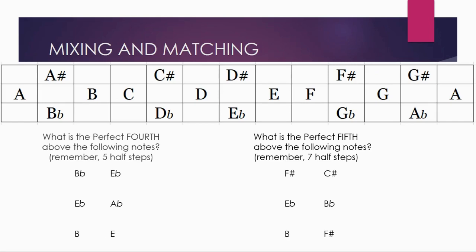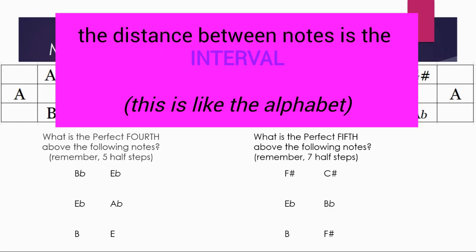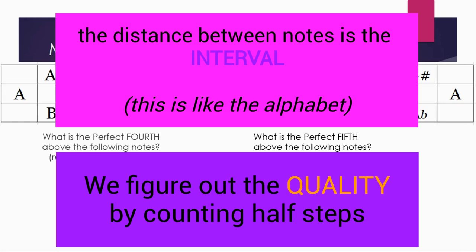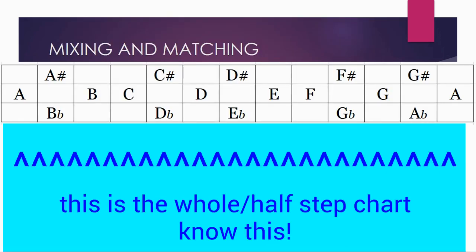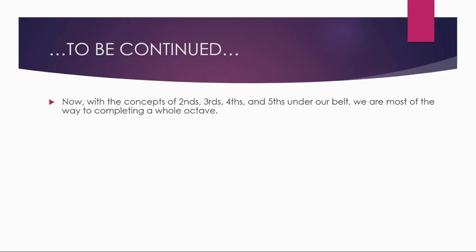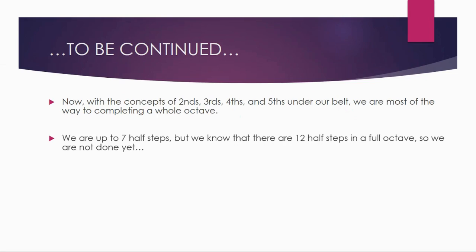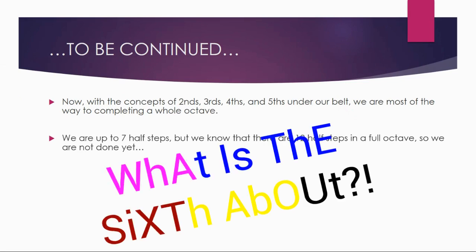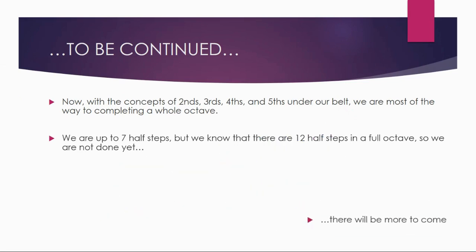So we've found our fifths and our fourths. It's a two-step process: number one, count alphabetically; number two, count half steps. It's important to know the order of half steps — B and C is already a half step, E and F is a half step, everything else is a whole step. With that knowledge, you can find any perfect fourth or perfect fifth in any key. With seconds, thirds, fourths, and fifths, we're most of the way to completing the whole octave. But we've only covered up to seven half steps, and there are twelve in a full octave — plus we skipped one entirely. There will be more to come. In the meantime, feel free to practice, check out some worksheets and internet resources. Happy practicing — see you next time.